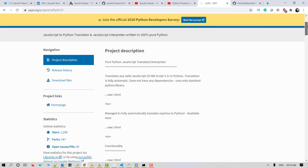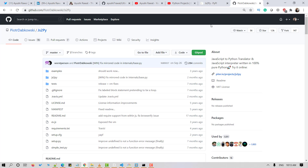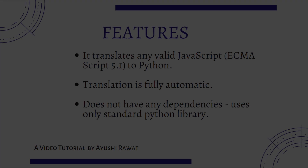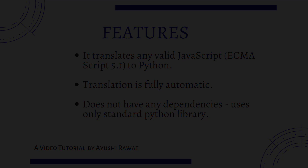As the name suggests, it is a module which can be used to translate JavaScript to Python. It acts as a JavaScript interpreter which is written in 100% pure Python. It translates any valid JavaScript ECMAScript 5.1 to Python. Translation is fully automatic and it does not have any dependencies — it uses only the standard Python library.